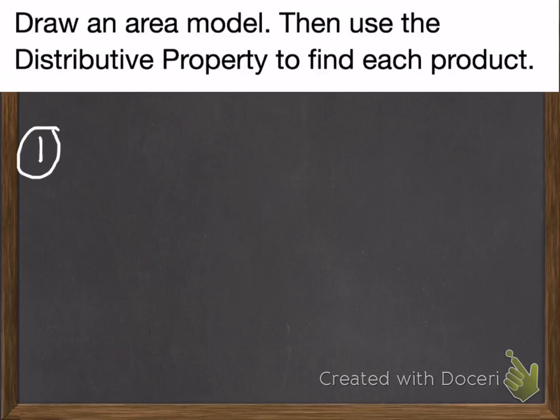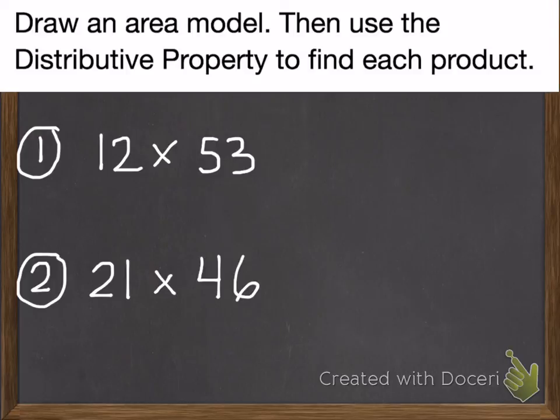Alright. Now you're ready for two problems. These ones take a little bit of time, so we're just going to do two. Your first problem is 12 times 53. Your second problem is 21 times 46. You need to draw an area model for each of them and use the distributive property to find each product. If you need to go back to one of your practice problems or the examples to see the pattern as you're doing these, go ahead and go back as often as you need to help you out. Thank you for watching, and have a great night.